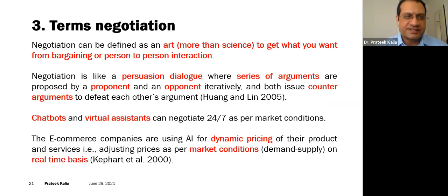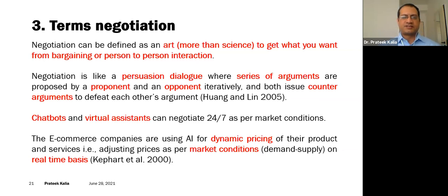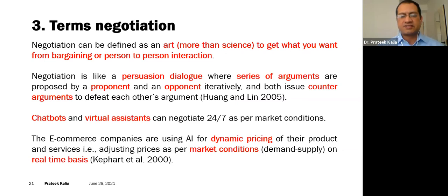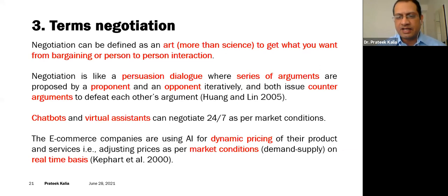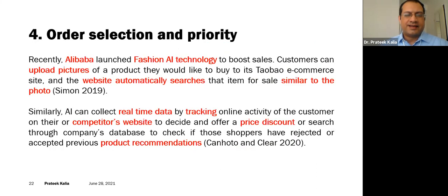The next point under order processing is term negotiation. When we go to a shop, we get into a dialogue with the shopkeeper — there are arguments, counter-arguments, and we try to get the best deal. But in online shopping and e-commerce, there is no person with whom we can have that dialogue; it is a one-way interaction with a website. So who is going to negotiate? Chatbots and virtual assistants — they are available 24/7, can negotiate as per market conditions, and offer dynamic pricing on a real-time basis.